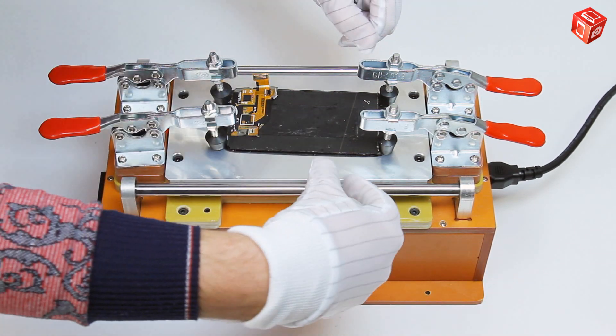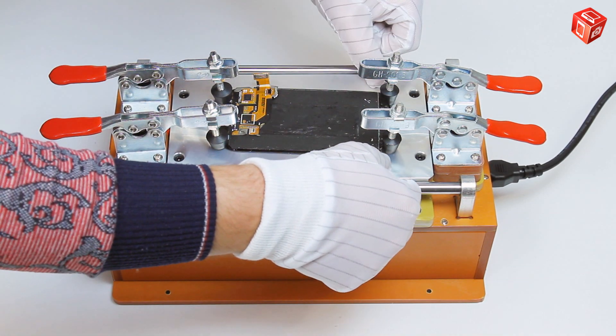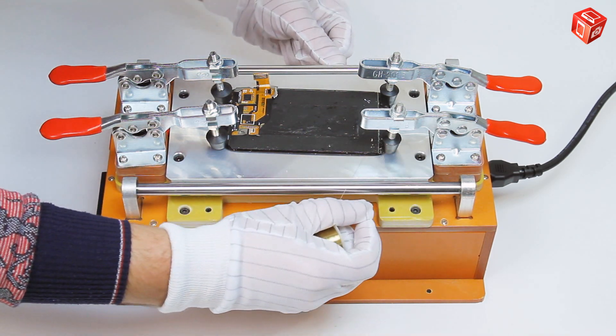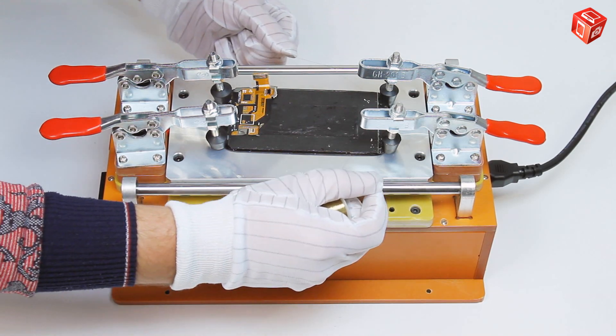Then, place the wire between the glass and the touchscreen. Be careful not to damage the polarization film. Move the wire left and right and pull it at the same time to cut off the glue.